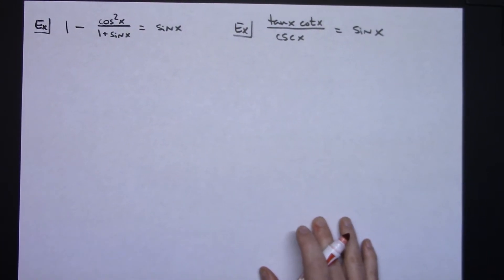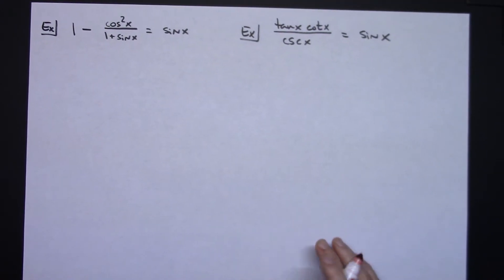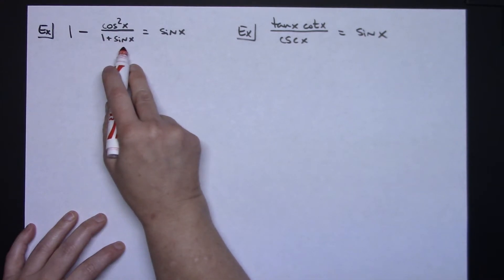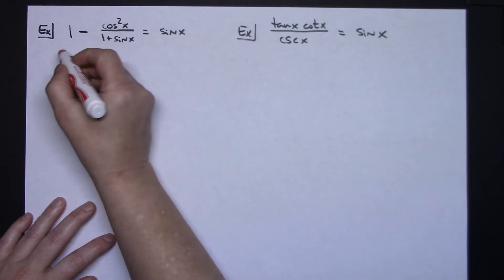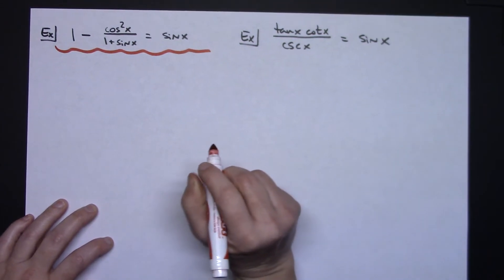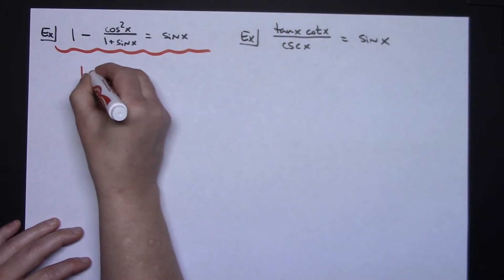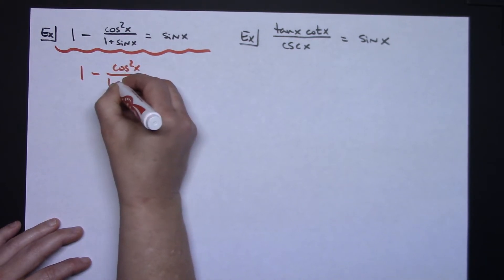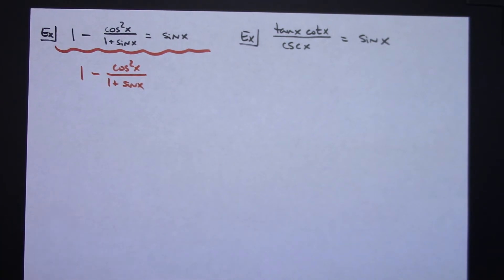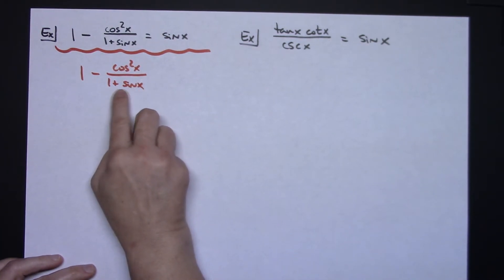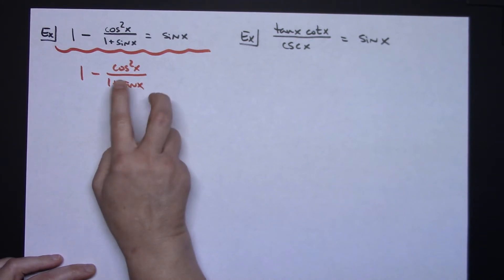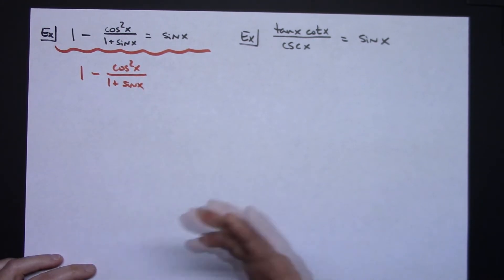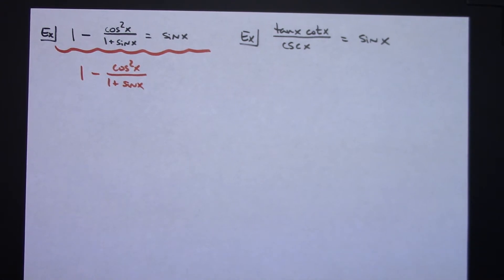Alright, let's take a look at two more examples. For this third one: 1 minus cosine squared x over 1 plus sine x equals sine x. I'm going to start with the more complicated left side. I've got 1 minus cosine squared x over 1 plus sine x. A common trick here — I've got 1 plus sine x on the bottom, so I'm going to multiply by the conjugate, 1 minus sine x over 1 minus sine x, because that's going to give me 1 minus sine squared x on the bottom.